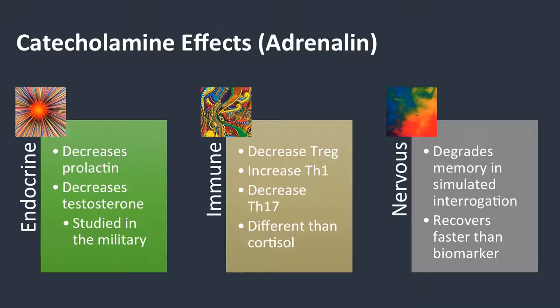Let's look at our adrenaline responses, because they're a little bit different than our cortisol responses for stress. For the endocrine system, adrenaline is going to decrease prolactin and decrease testosterone — and this has been studied in the military. For the immune system, we're decreasing T regulatory cells and increasing TH1. That's the different response between cortisol and epinephrine.